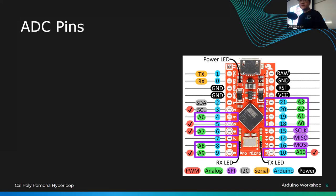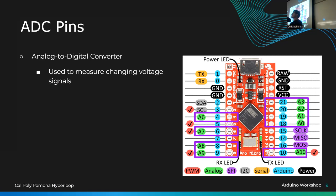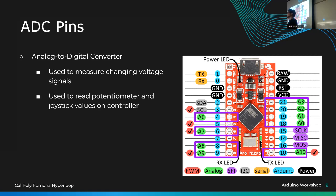ADC pins are highlighted in green and stand for Analog to Digital Converter, used to measure changing voltage signals. One project I have beginners do is build a voltage detector — basically a multimeter using the Arduino — and you must use ADC pins for that. The ADC maps voltage signals between 0 and 5 volts to a number between 0 and 1023, equally spaced. You can also modify the resolution — 1023 corresponds to 10-bit resolution (2^10), while 8-bit is 255 (2^8).